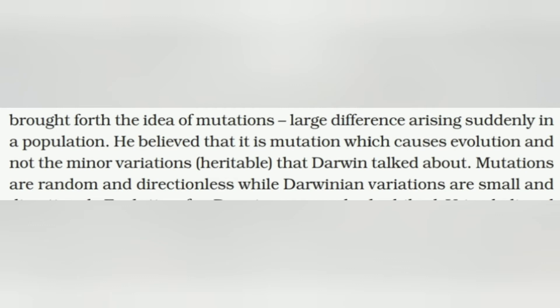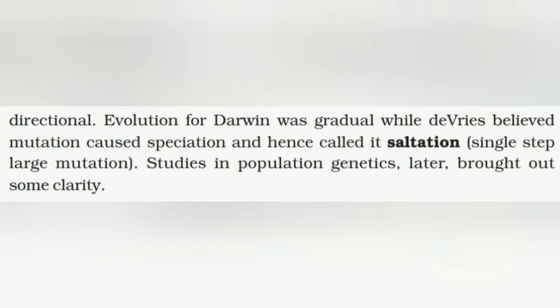De Vries believed that it is mutation which causes evolution and not the minor heritable variations that Darwin talked about. Mutations are random and directionless, while Darwinian variations are small and directional. Evolution according to Darwin was gradual, while de Vries believed mutation caused speciation and hence called it saltation — that is, single-step large mutation. Studies in population genetics later brought out some clarity on this difference between the Darwinian theory and de Vries's theory.